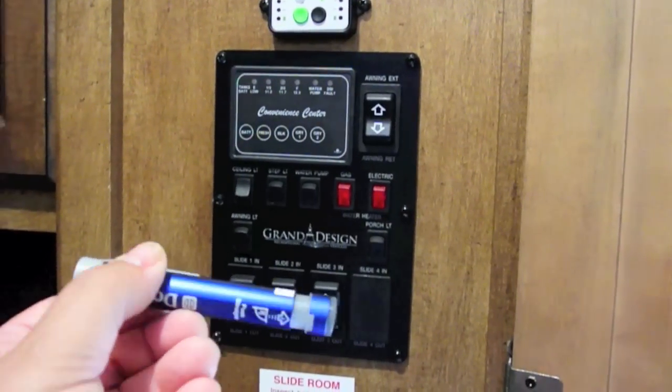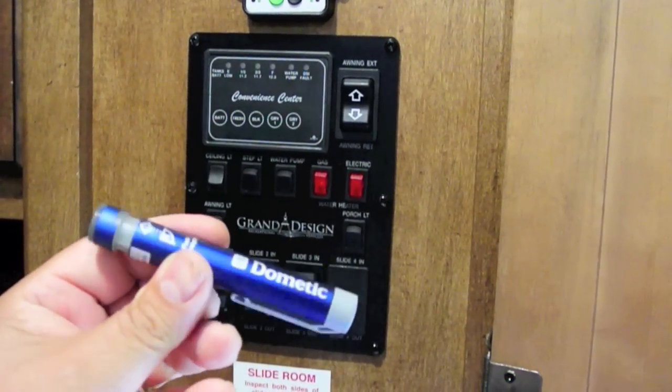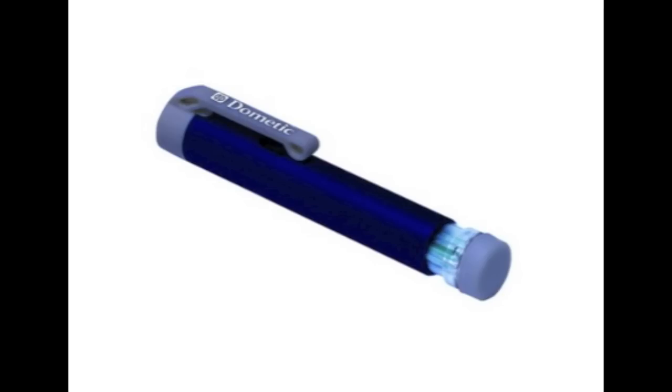So here we go, the Dometic $35 tank check. Since this Dometic unit is about half the price of the Truma unit, I'm thinking this is the best way to go if you want to know how full your LP tank is.